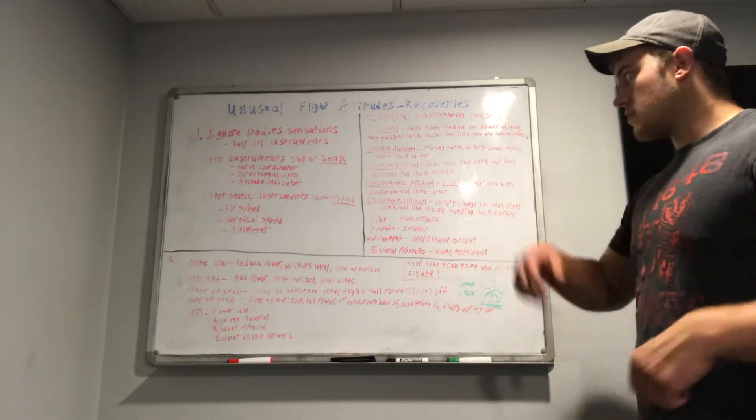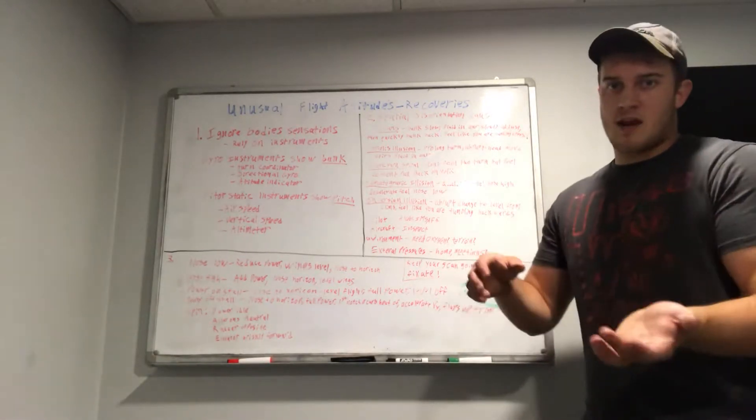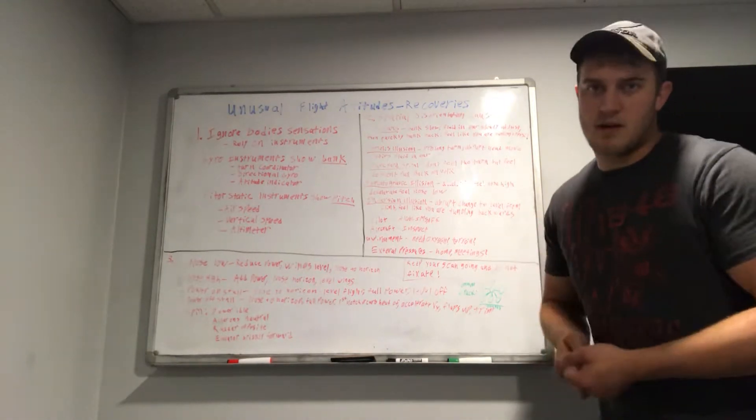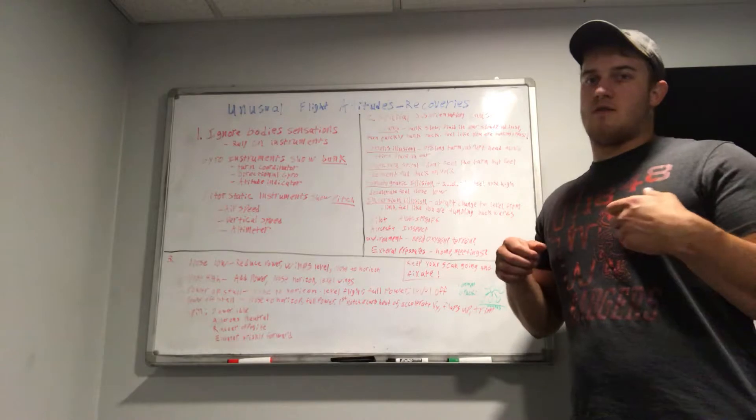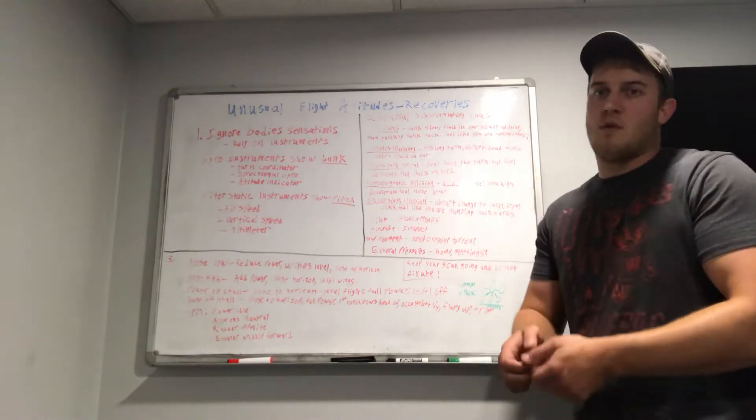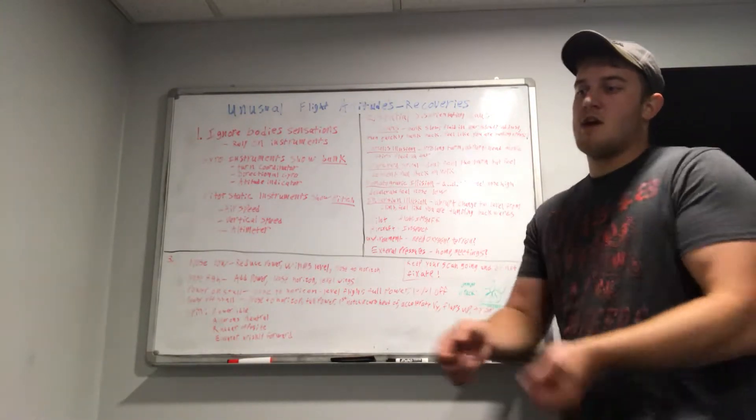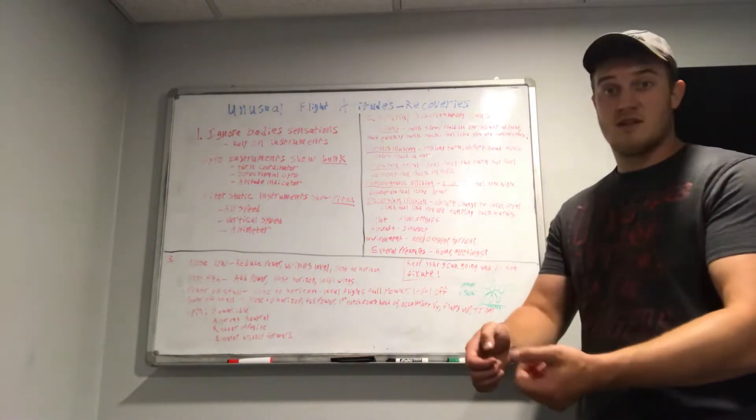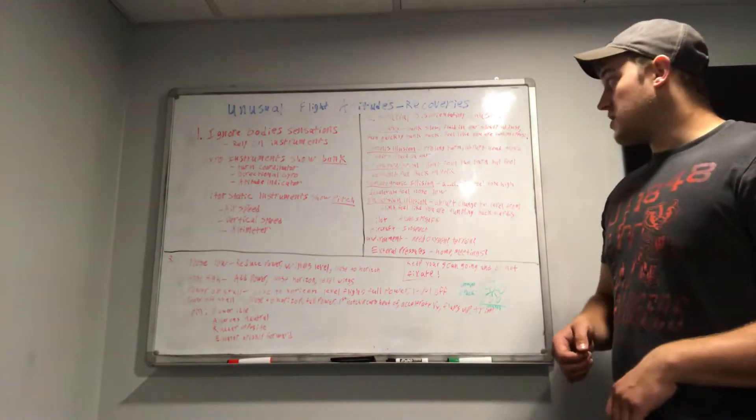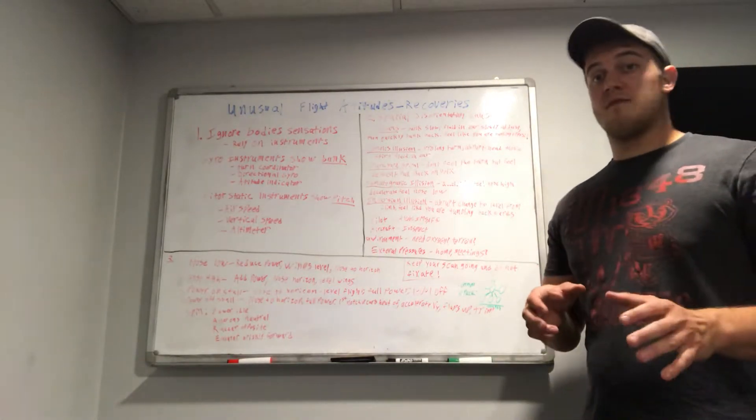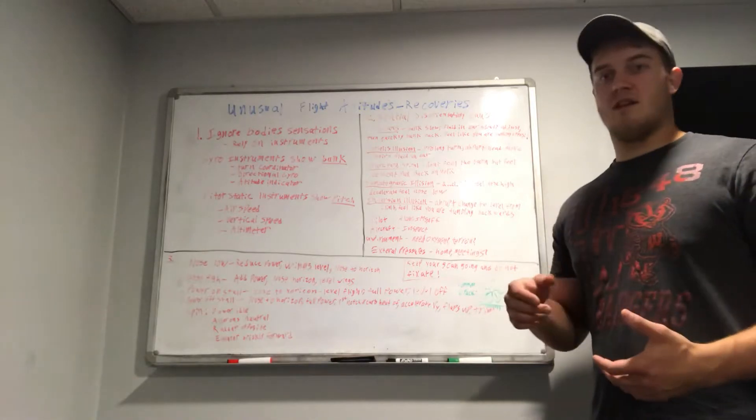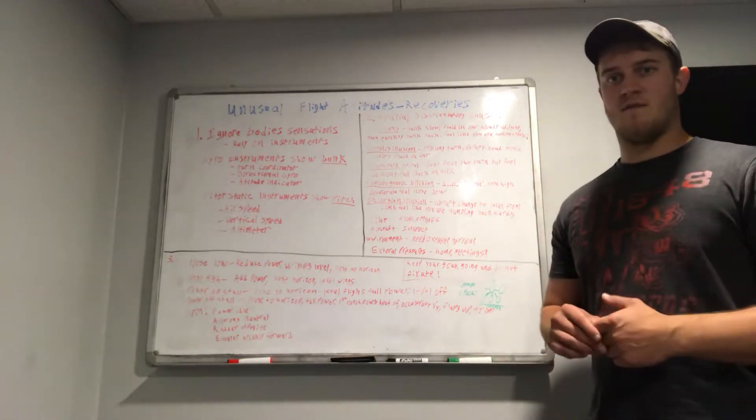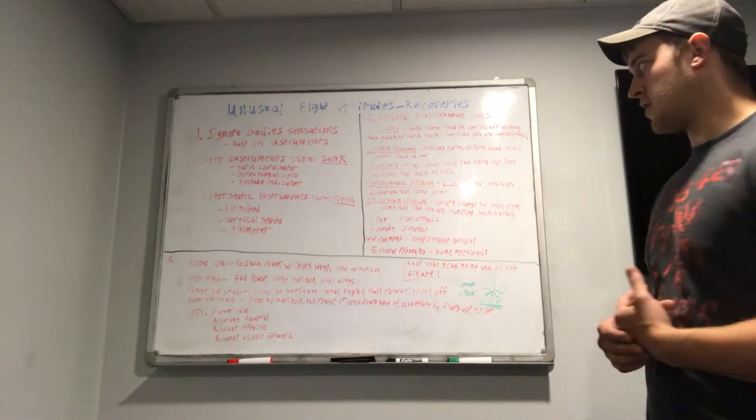Graveyard spiral. Again, you're in a bank and you're established, you've been there for a while, but you do feel like you are losing lift because you lose your horizontal component. And ultimately what you want to do is you're going to feel like you need to pull back. But if you're in a bank, what that can do is tighten the turn. So you need to be aware of that because tightening the turn could lead to stalling, spinning, and aggravate the maneuver that you're actually trying to do.